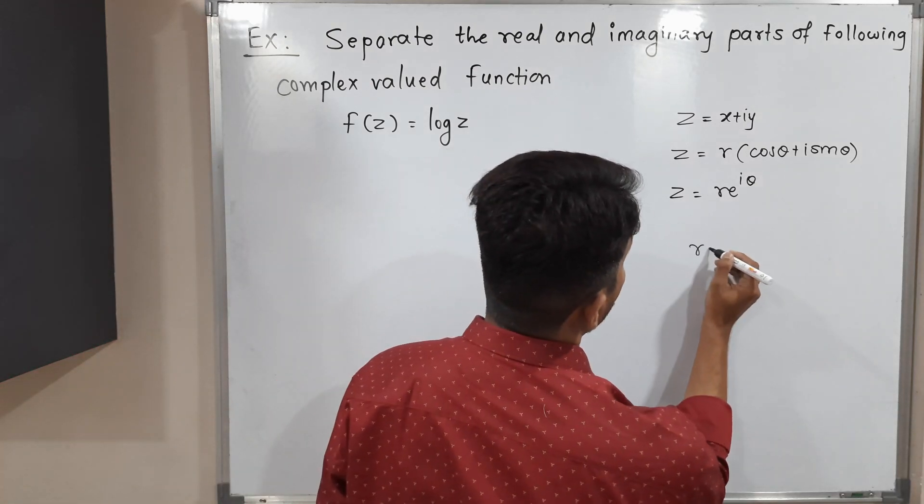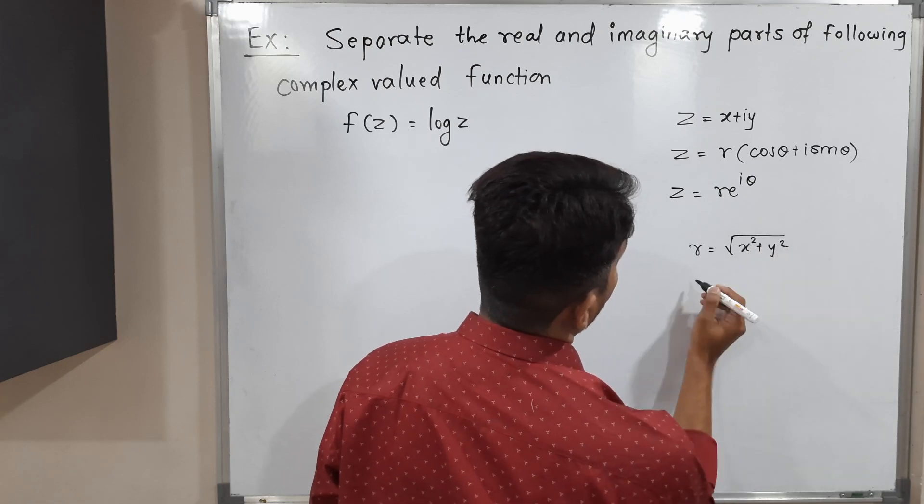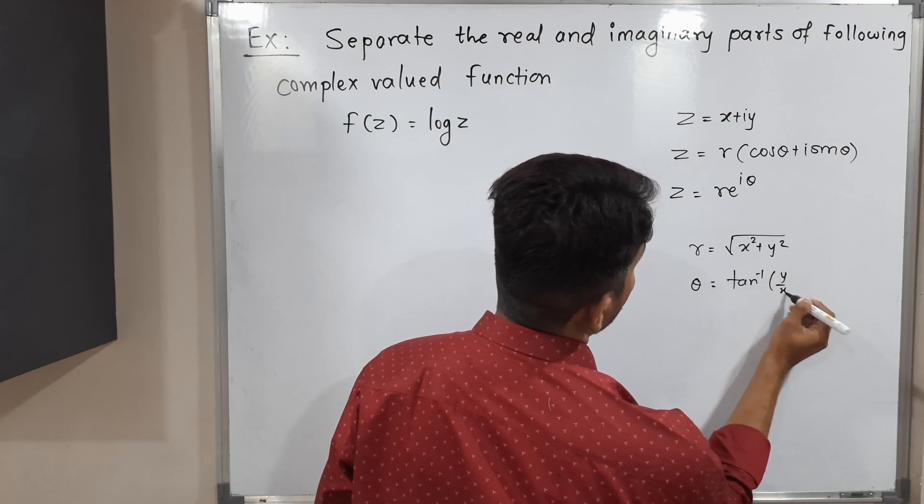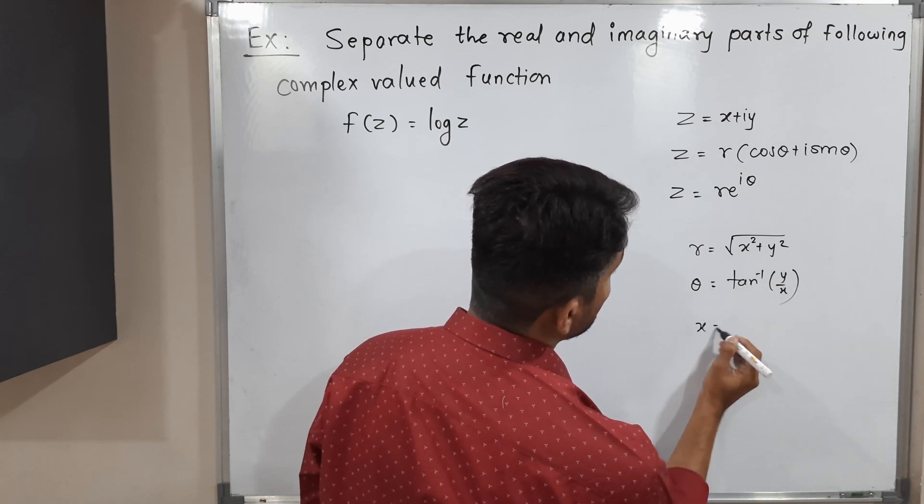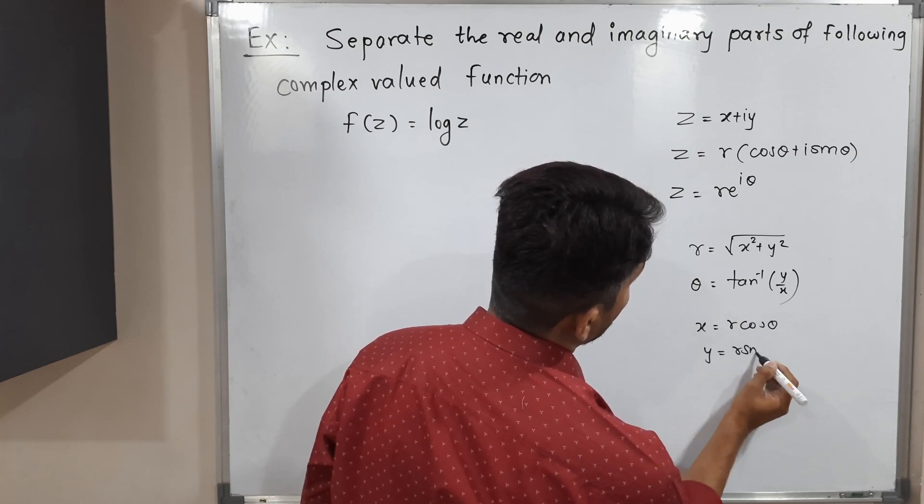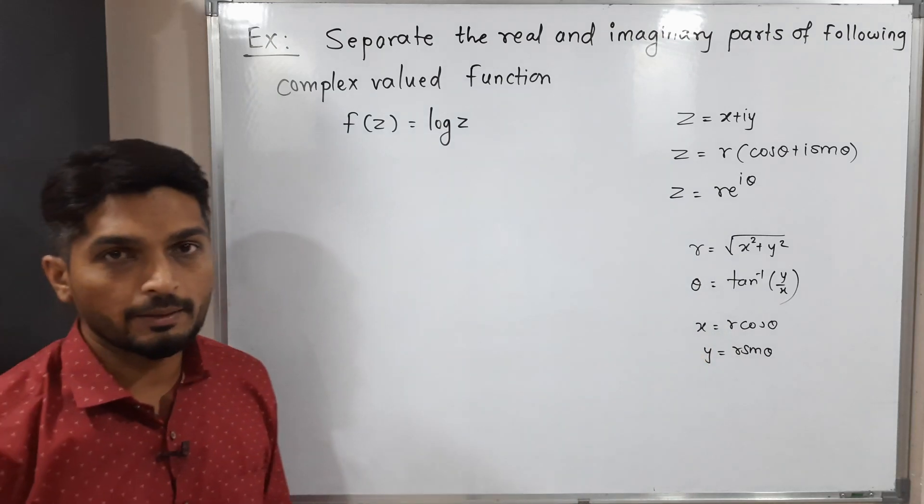r is equal to the square root of x² + y², and θ is tan⁻¹(y/x). And one more thing: x = r cos θ and y = r sin θ. So these are the relations between r, θ and x, y.